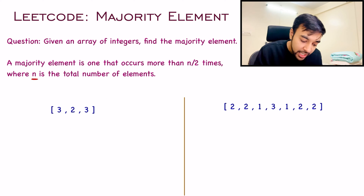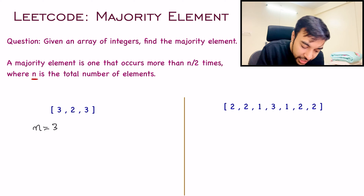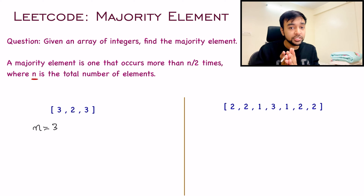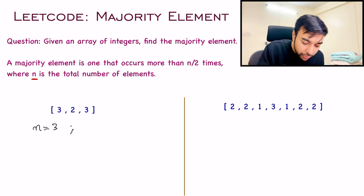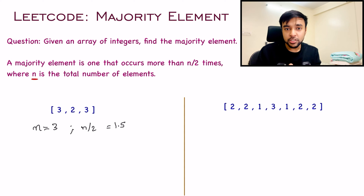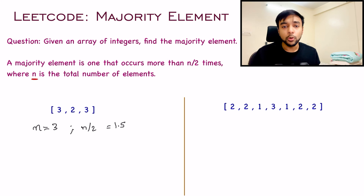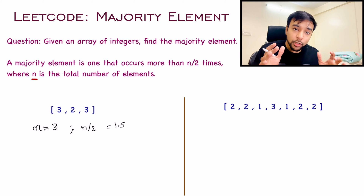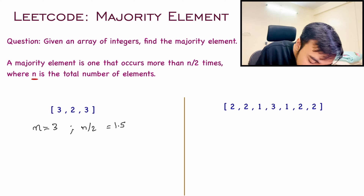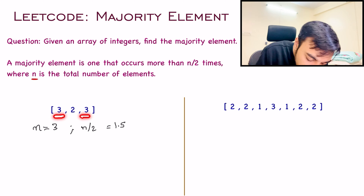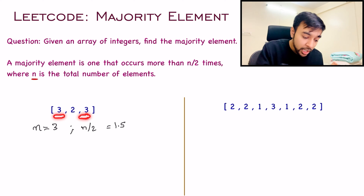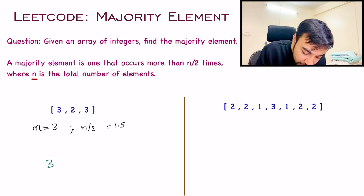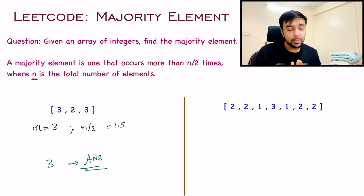So if an array has 10 elements, the majority element will be one that occurs more than 5 times. In our first test case, the value of n is 3, so n by 2 will be equal to 1.5. Therefore, you need to find the majority element that occurs 2 times or more. When you look at this array, you can see that the element 3 occurs 2 times. So for test case number 1, 3 is the majority element.